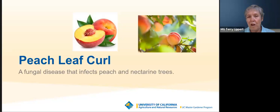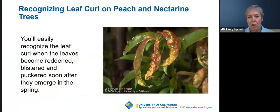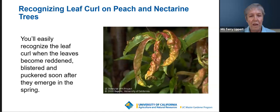Peach leaf curl — if you've got peaches or nectarines, chances are pretty good that you saw peach leaf curl on your tree this past springtime. If you contacted us in March or April, we told you there's really nothing you can do about it now — just expect those leaves to fall off, pick them up, and get them out of your yard. This is what it looks like when it's infecting the tree in the springtime.